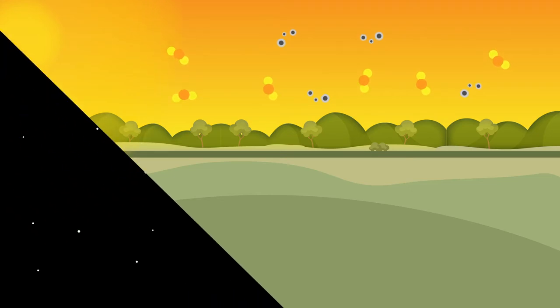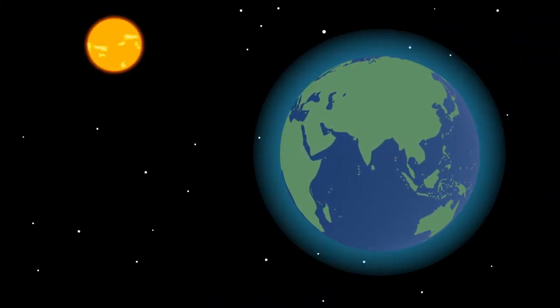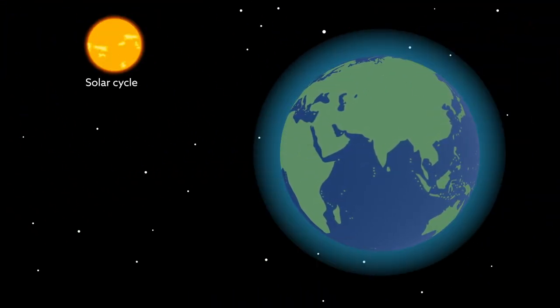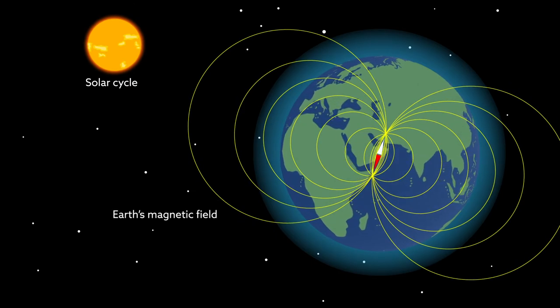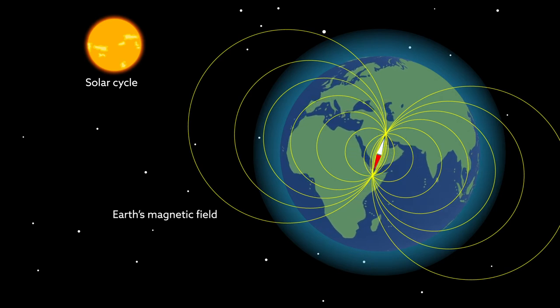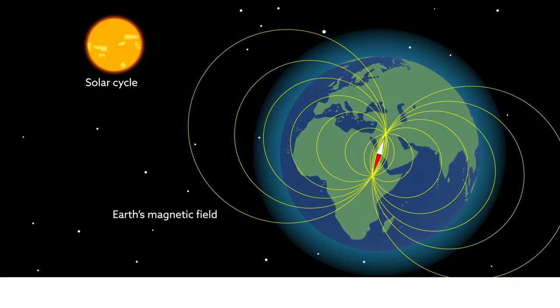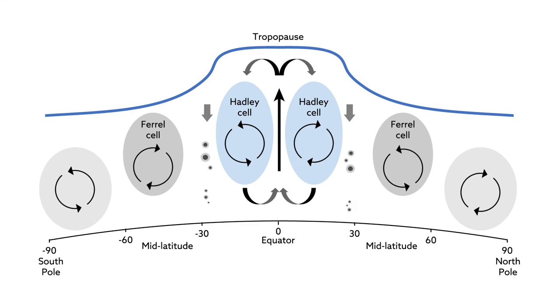In contrast to popular theories, the phenomena we observe are neither the result of the solar cycle nor of a weakening of the Earth's magnetic field, nor are they caused by a shift in the Earth axis. These are visible as steady cycles in our data, while what we observe and measure is a clear anomaly.